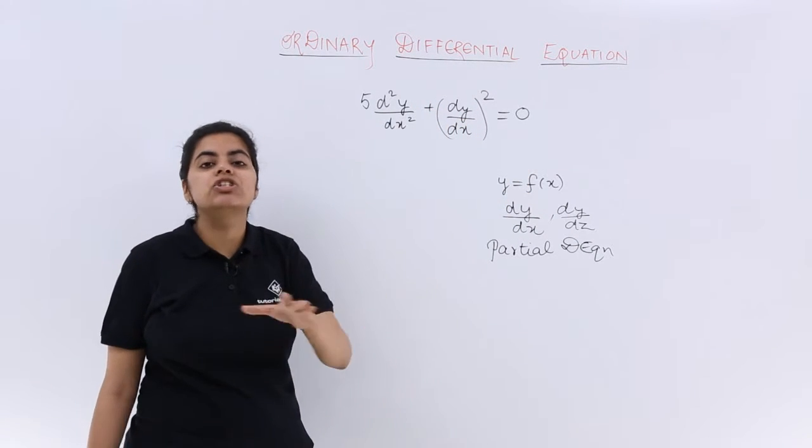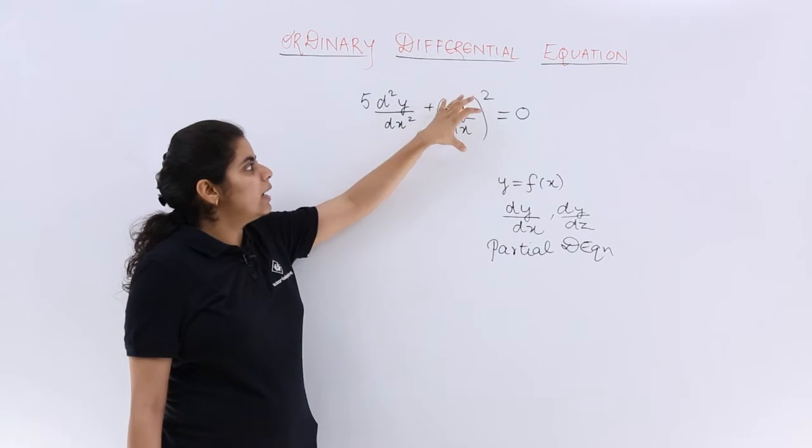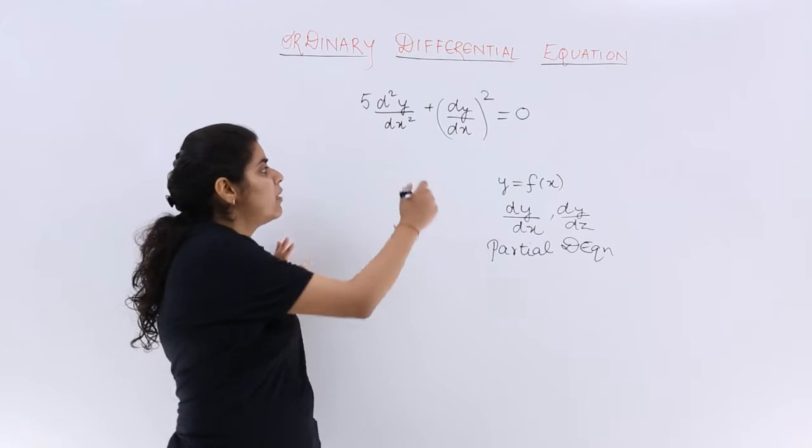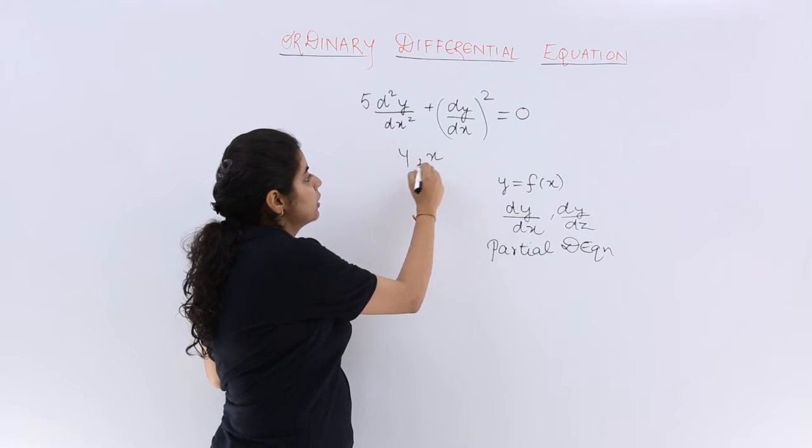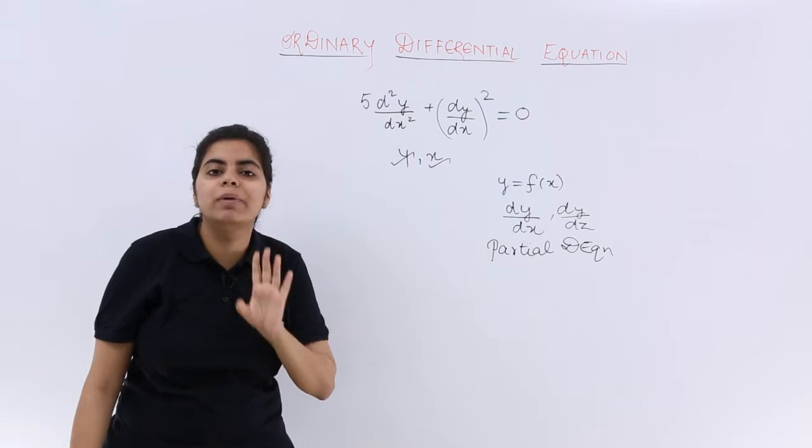As you can see, the differential coefficients or the differentiation terms are dy by dx, second order of dy by dx and so on. Only y and x come into picture. This is your dependent variable, this is only one independent variable.